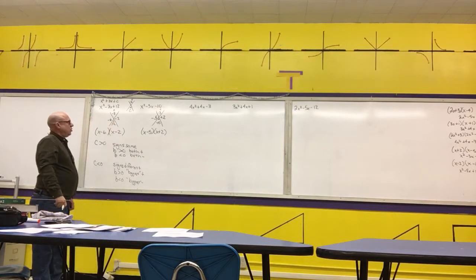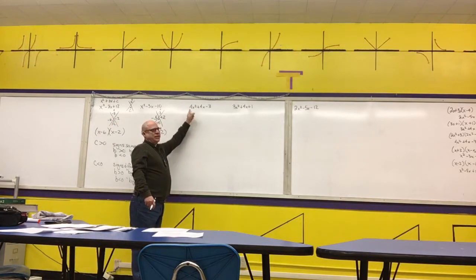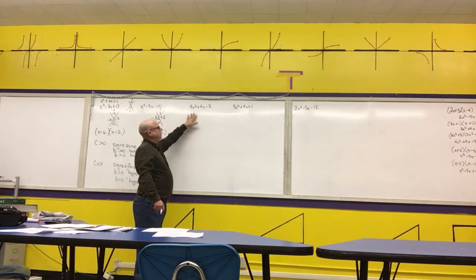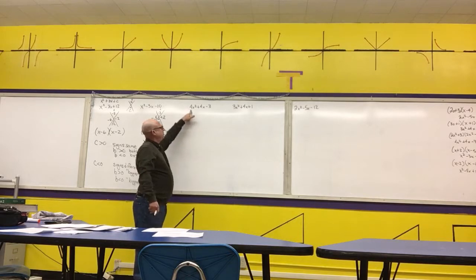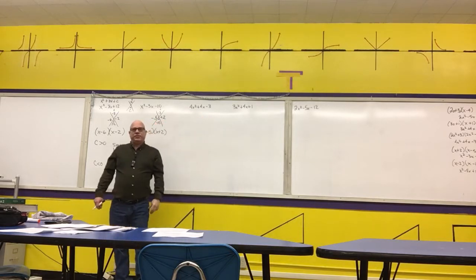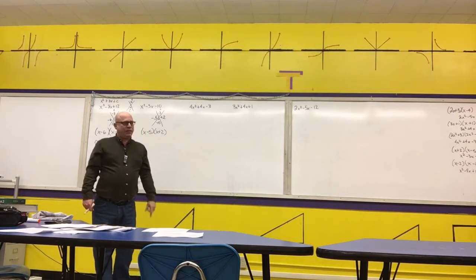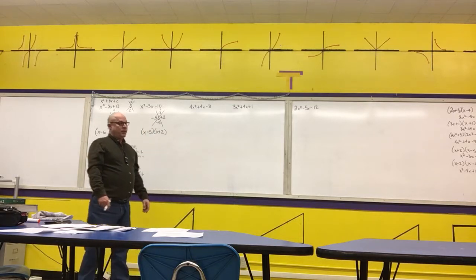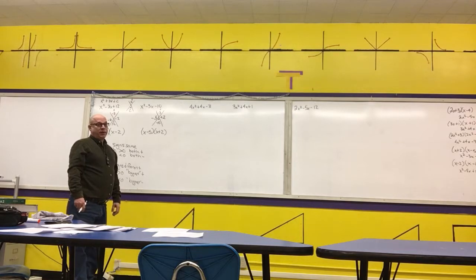Where these get more difficult is when the x squared term has a coefficient in front of it. In that case, I first look for perfect squares. If it's not a perfect square, we have to do either the slide and divide method or factoring by grouping. My recommendation is factoring by grouping.